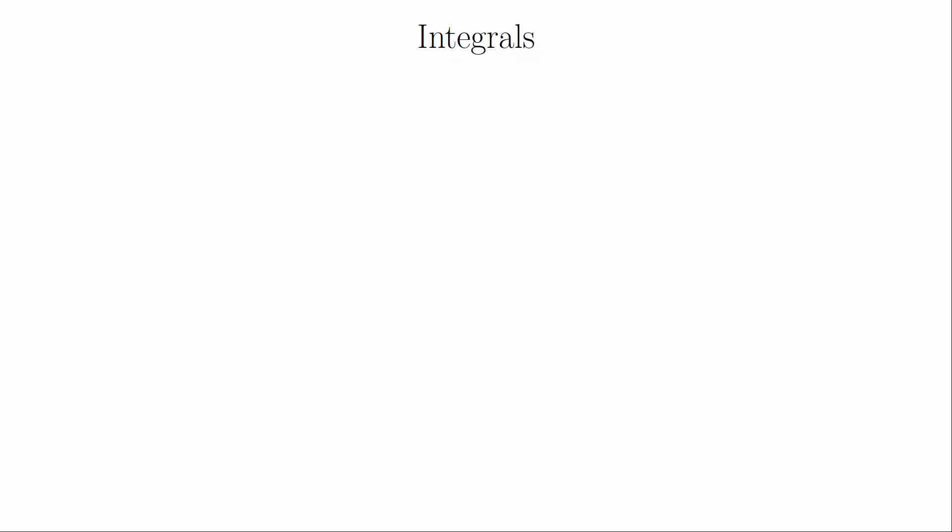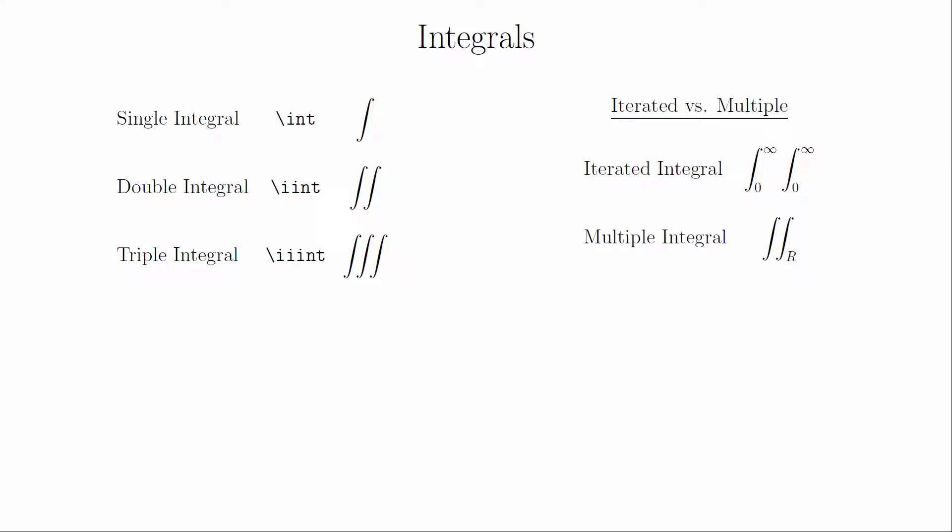Integrals behave like sums. You can put the limits above and below in exactly the same way. A single integral is int, a double integral is iint, and a triple integral is iiint. There is a distinction here between double or triple integrals and iterated integrals. The double and triple integral symbols are just single symbols with a single space to put information above or below. If you have an iterated integral with limits on each part, you will need to write them as multiple single integrals.